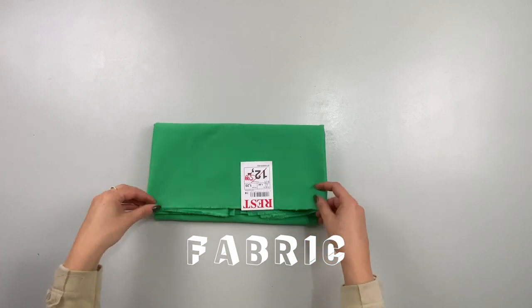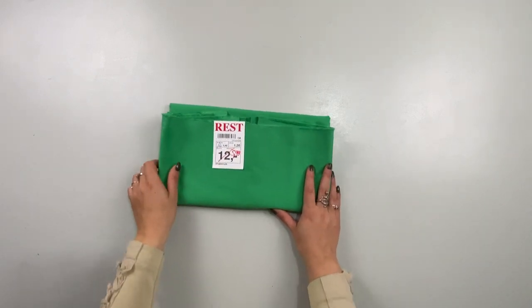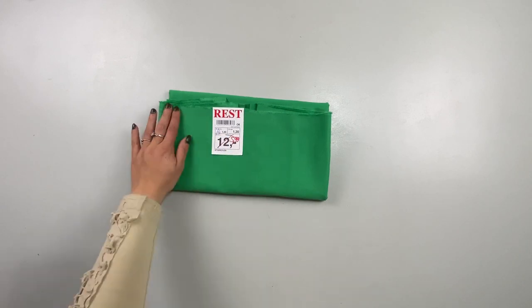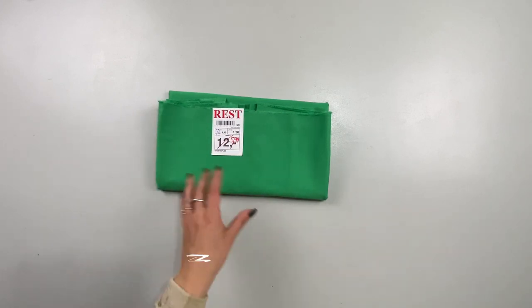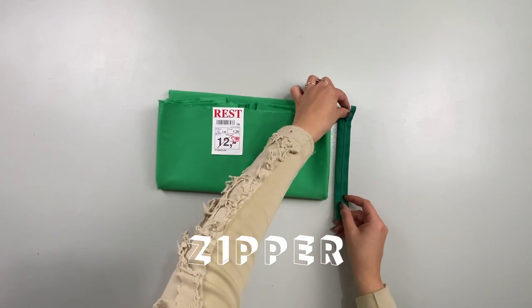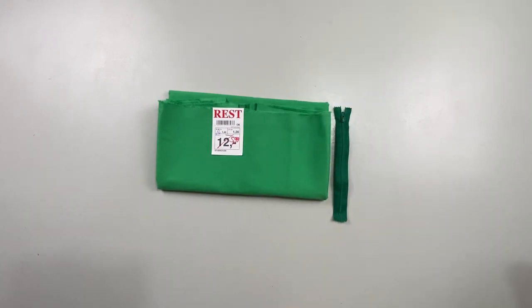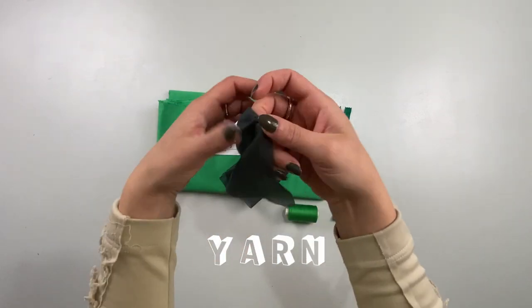I got my green fabric from the remnant table at the fabric store. It was a bit more than a meter and for a mini skirt that's plenty of fabric. Then you need a zipper. I recommend a length around 18 centimeters, and the sewing yarn. For the waistband we need a bit of fusible interfacing.